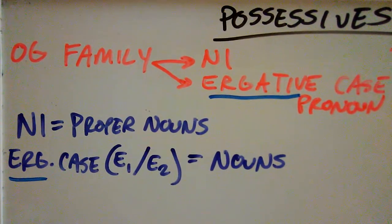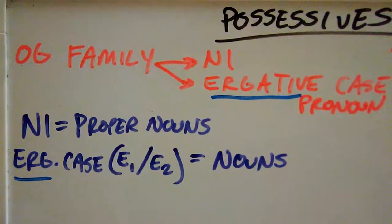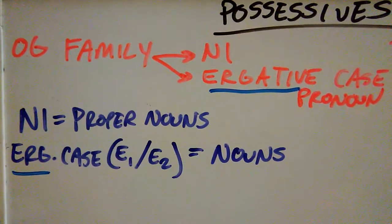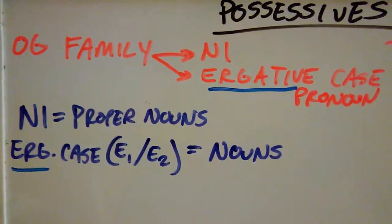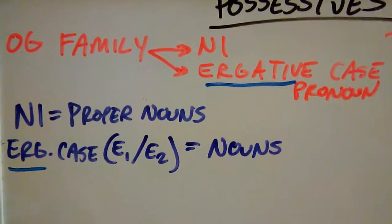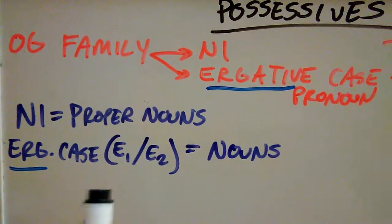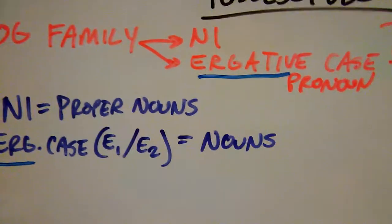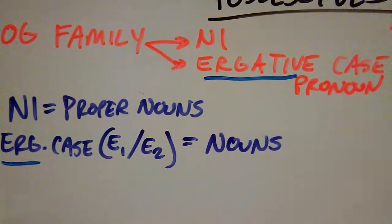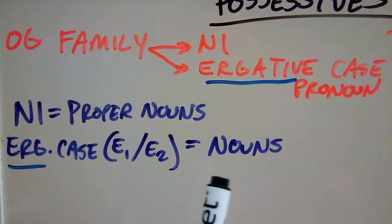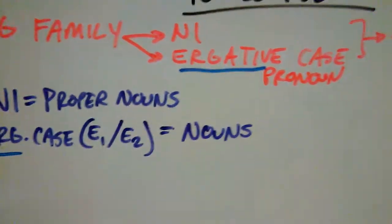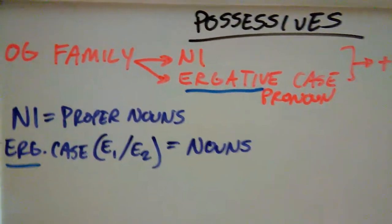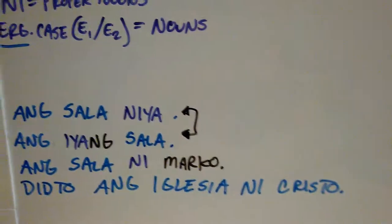Ni is a part of the OG family of markers, and the ergative case pronouns are also part of the OG family of markers — just like the absolutive case pronouns are part of the ANG family of markers. These ergative case pronouns, the pre- and post-position forms, mark nouns with possession. I'll show you the examples here — it's just a quick video on possessives, but I want to make this video to clarify things.